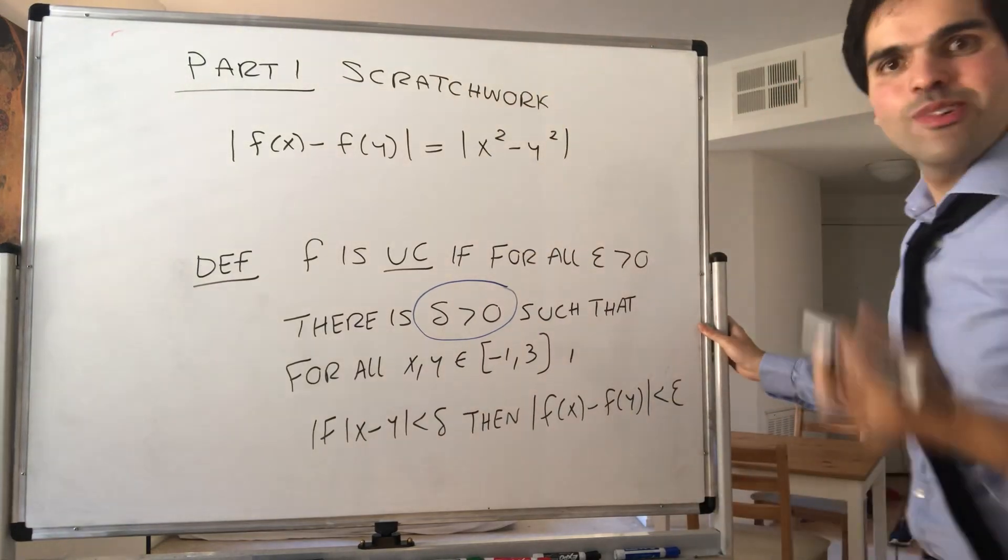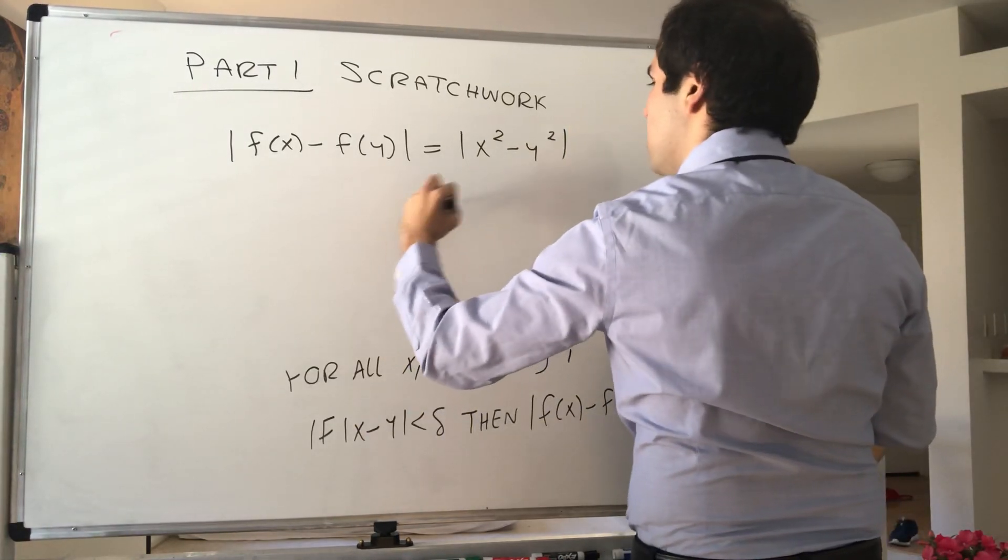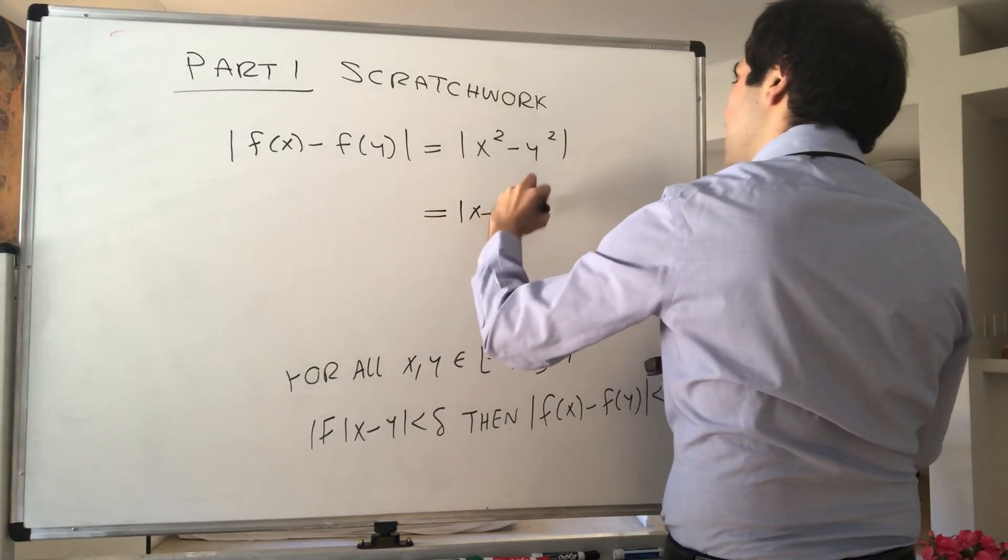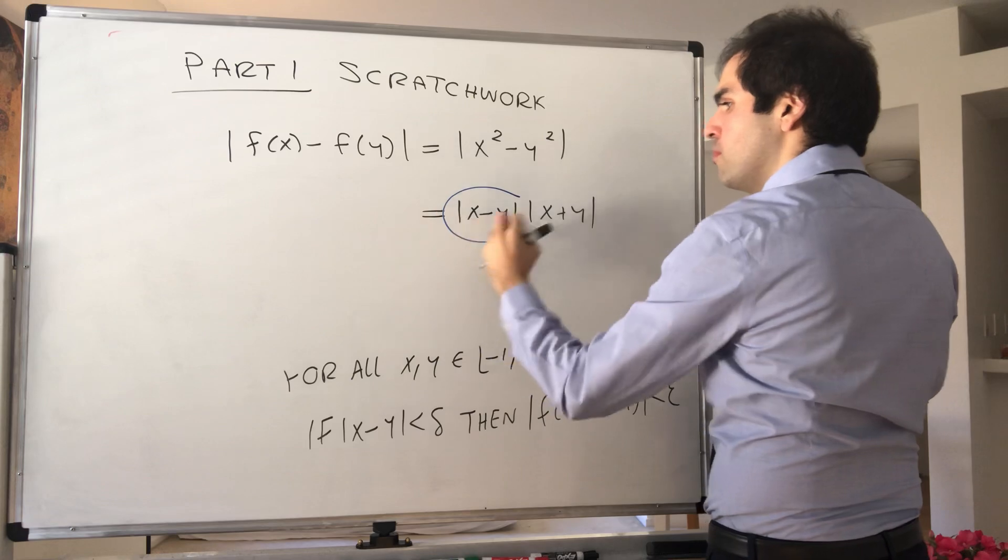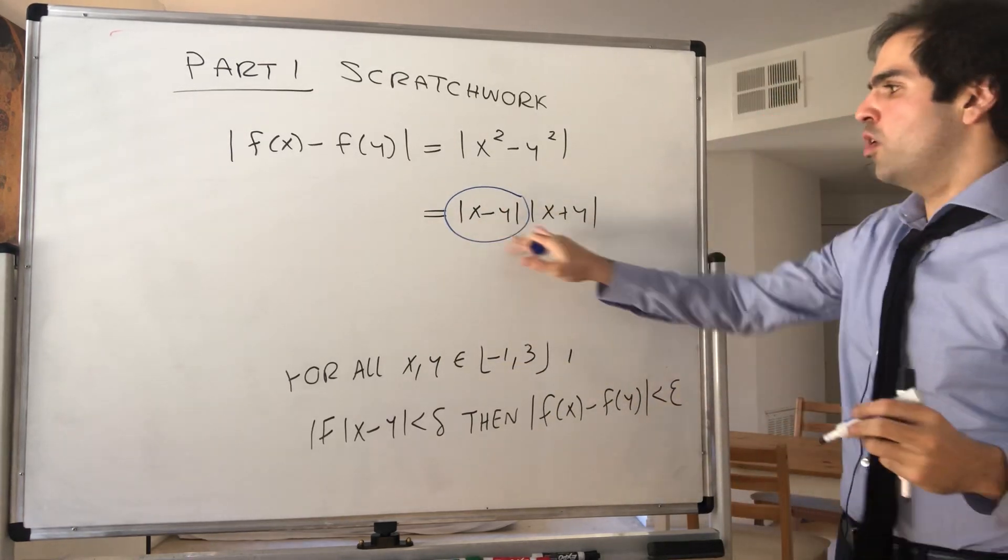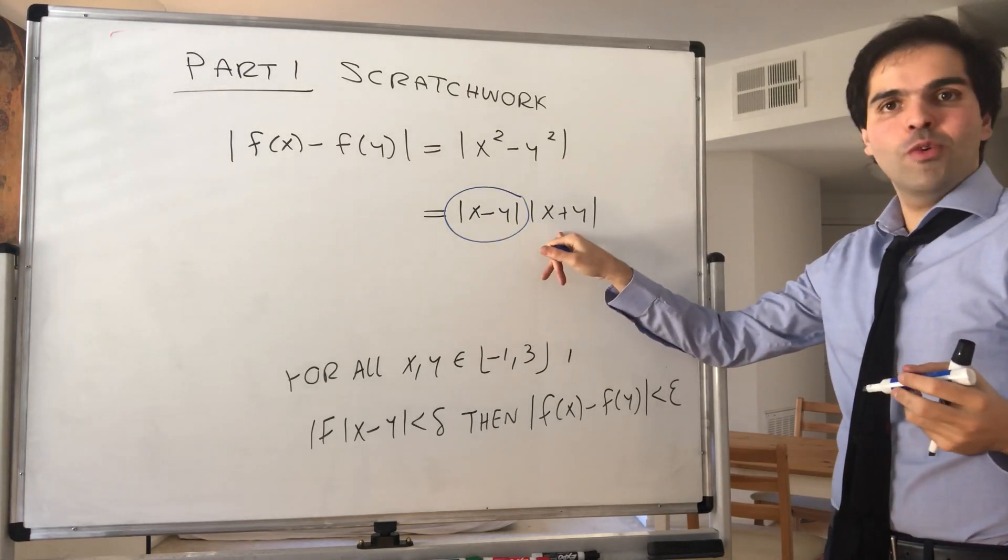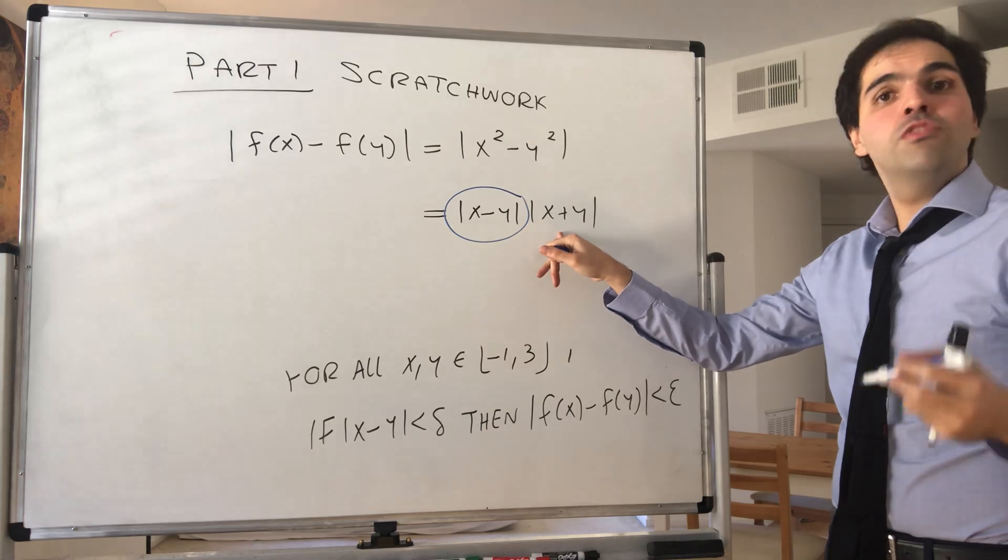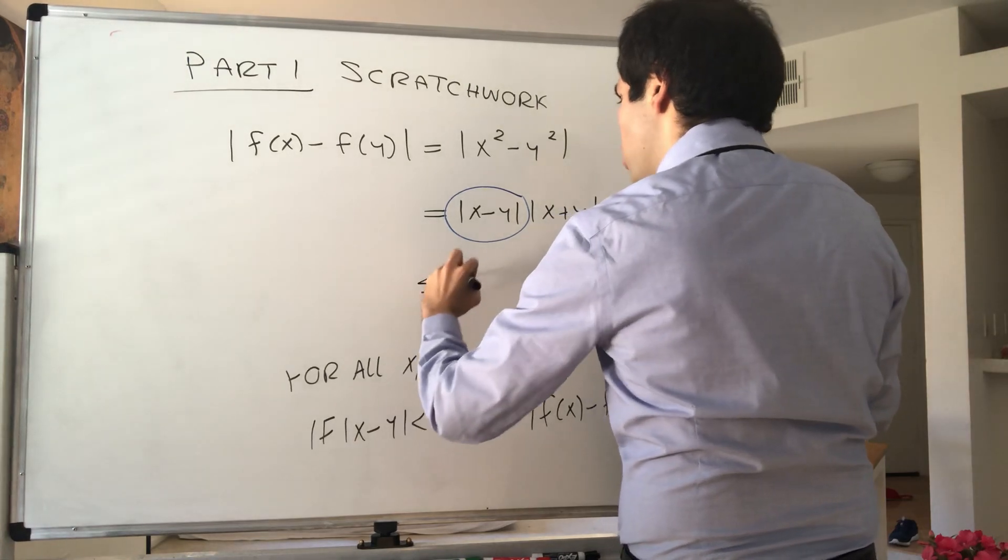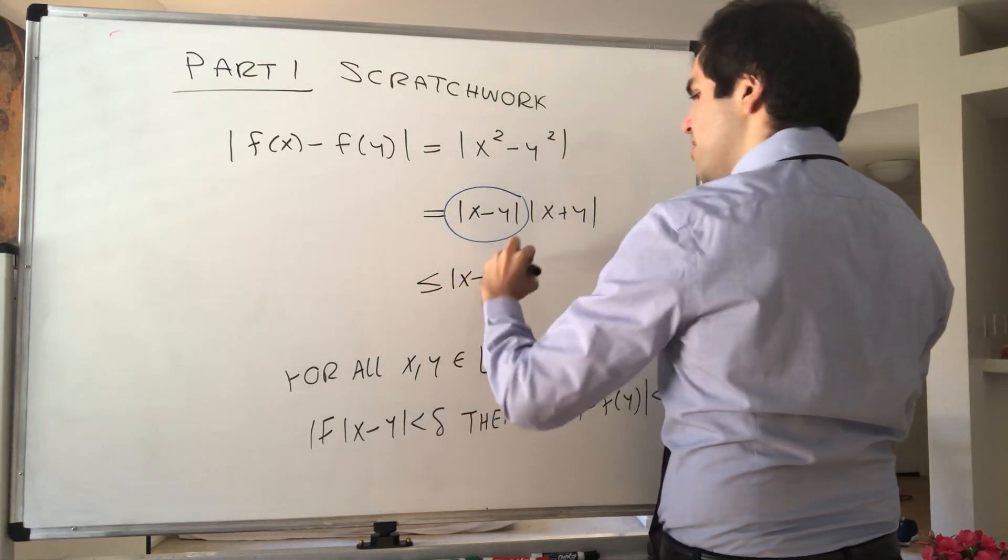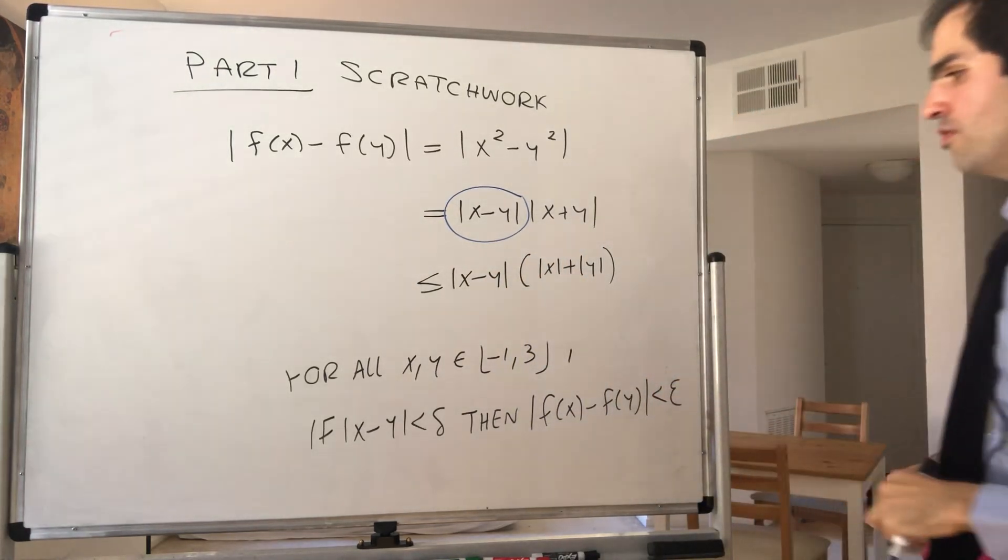The nice thing is, of course, we can factor that out. So this becomes |x - y||x + y|. Now, here's the thing. So this is the stuff we have control over, and this is the stuff we want to control. And in particular, we want to make this less than a constant. But not a problem at all, because by the triangle inequality, this is ≤ |x - y|(|x| + |y|).